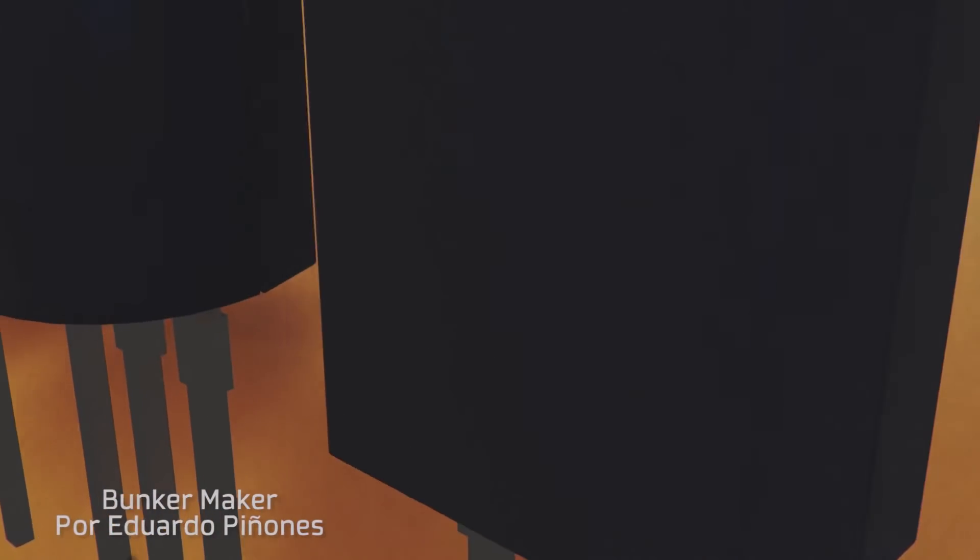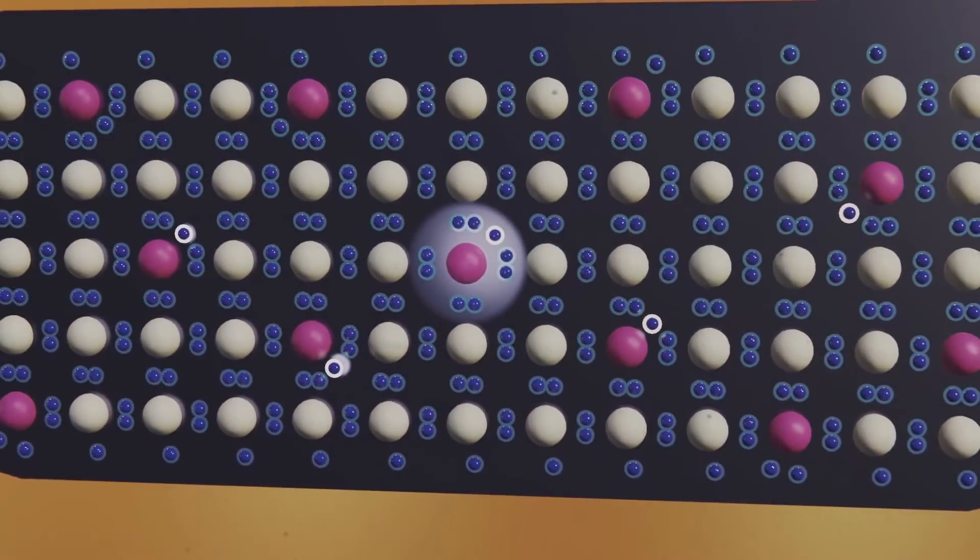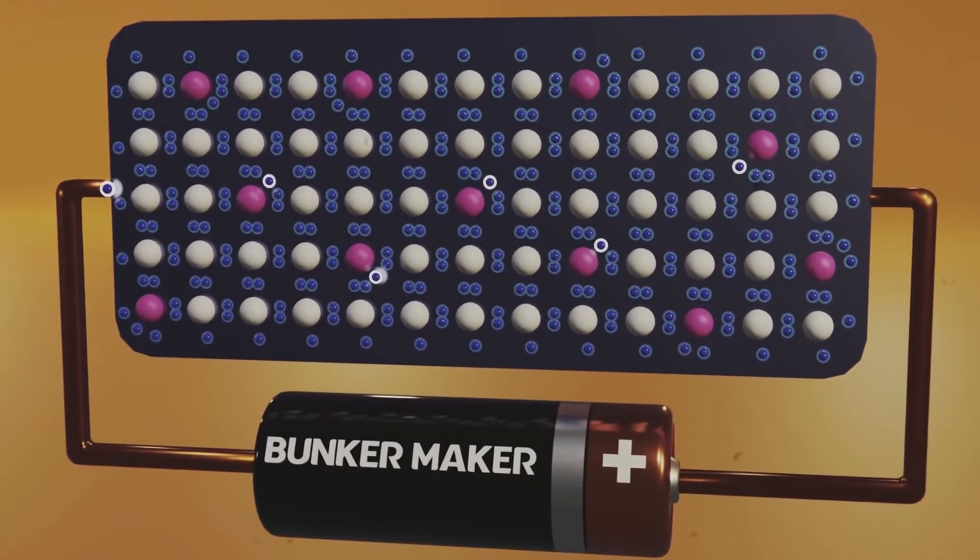In the previous chapter we saw in detail how an NPN transistor works and how semiconductors interact with each other to allow the passage of electrons under some conditions.